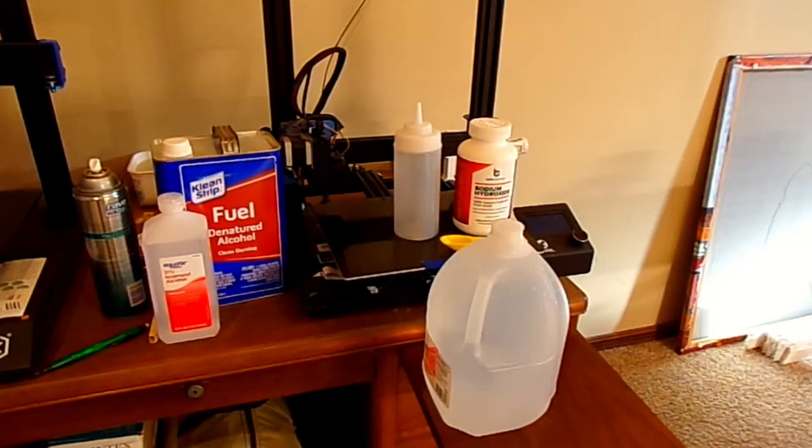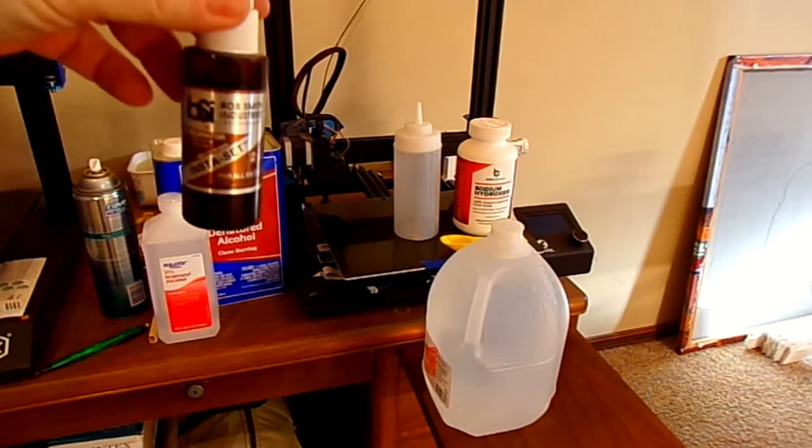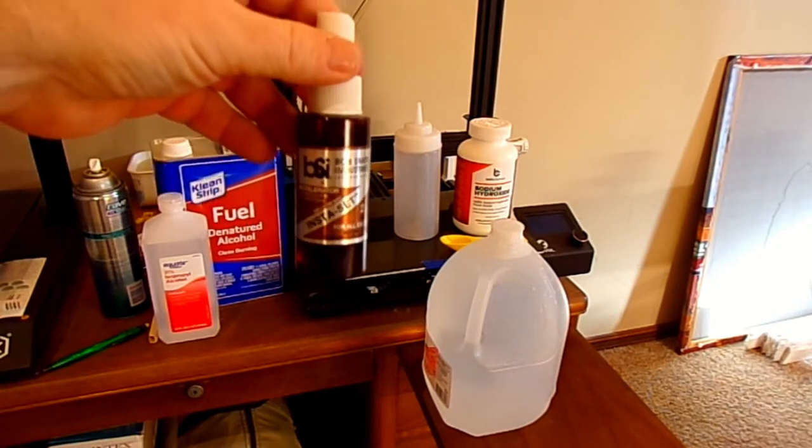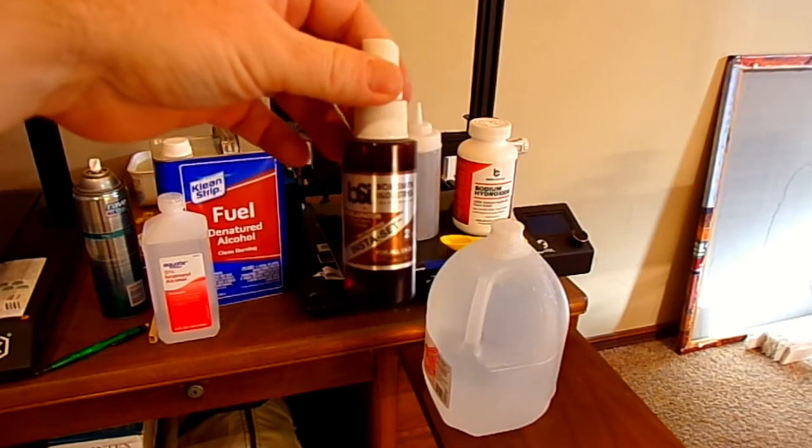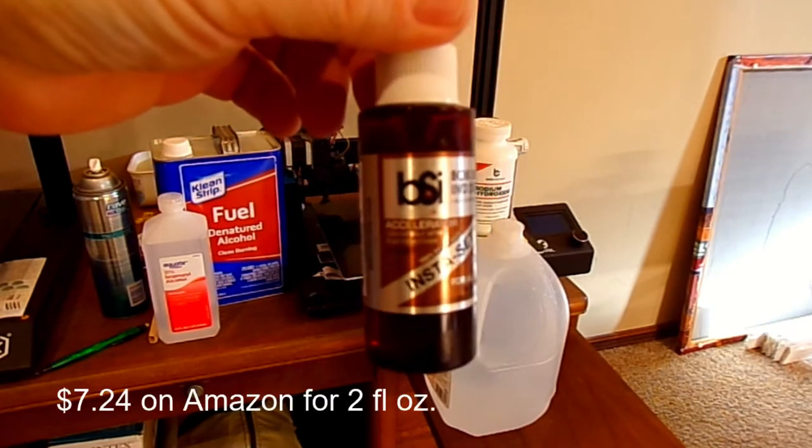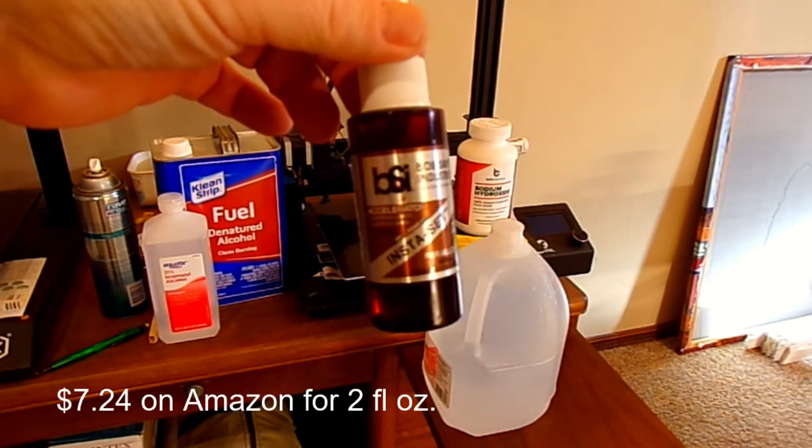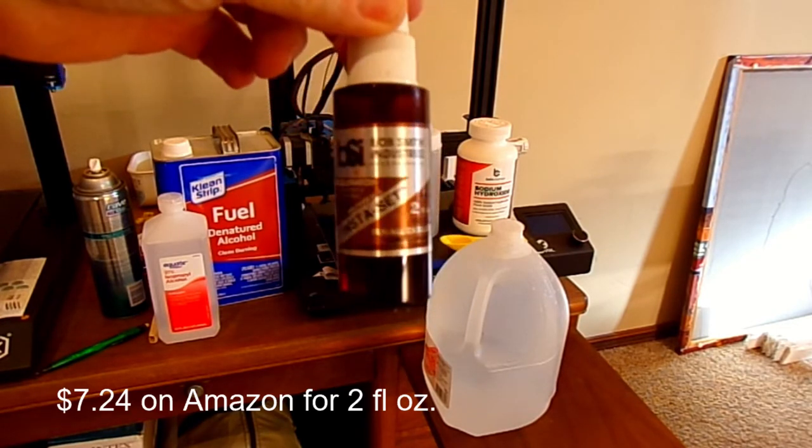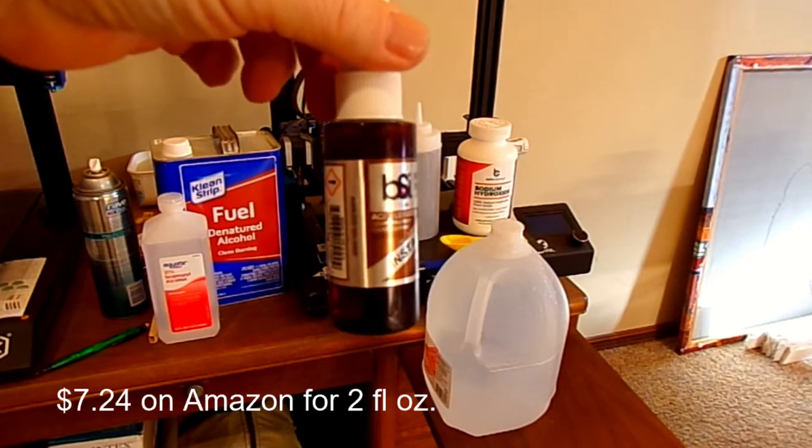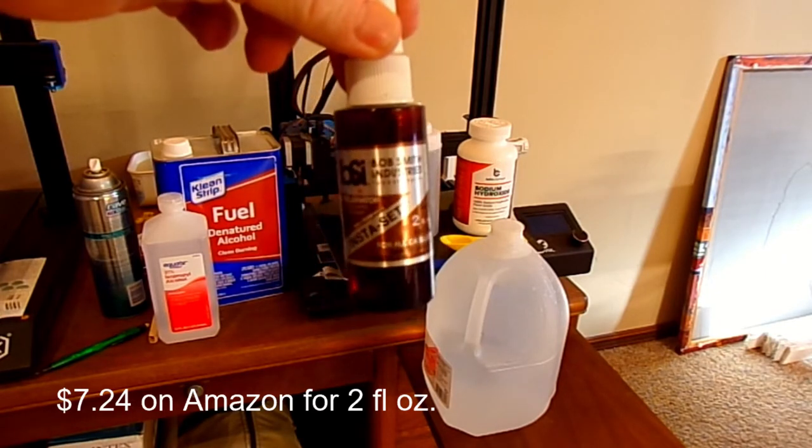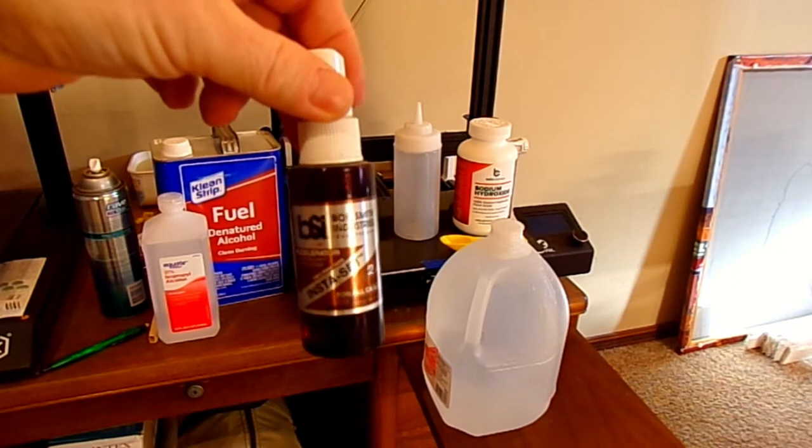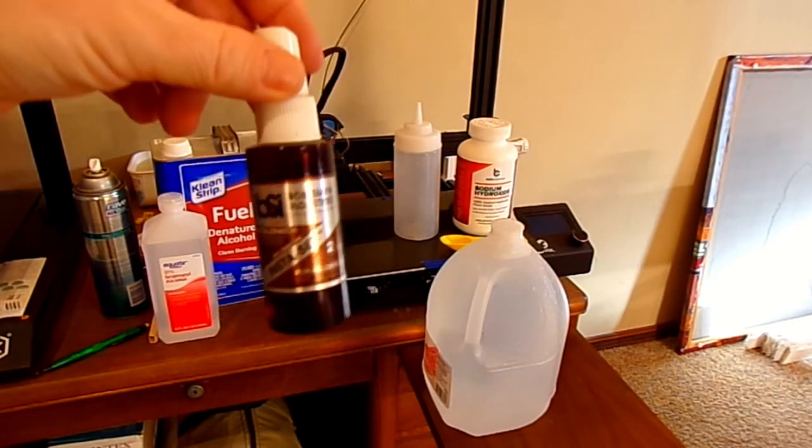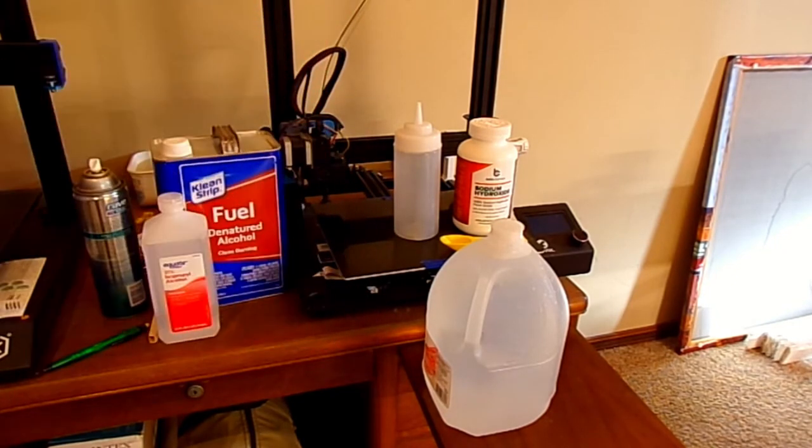I want to talk to you today about CA accelerator. I started out using Bob Smith Industries Insta-Set - that's two fluid ounces. It's not cheap, Bob Smith stuff is fairly expensive.